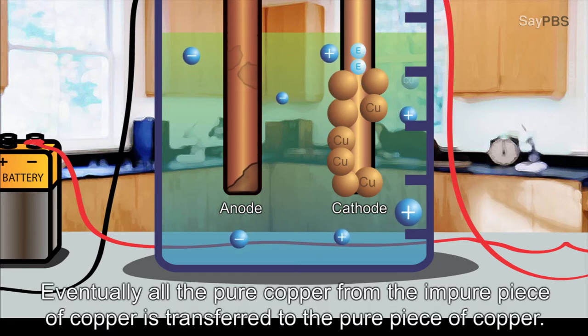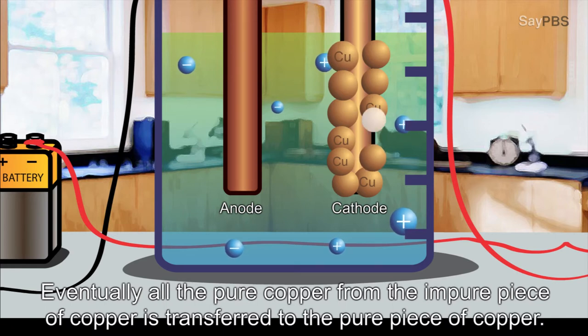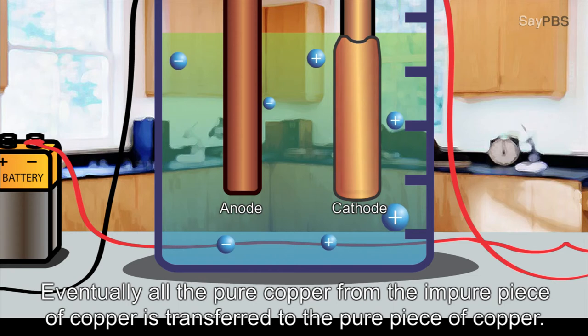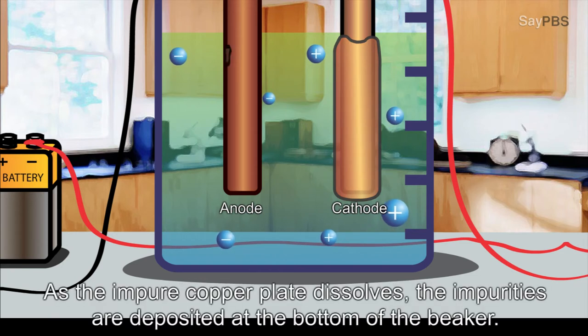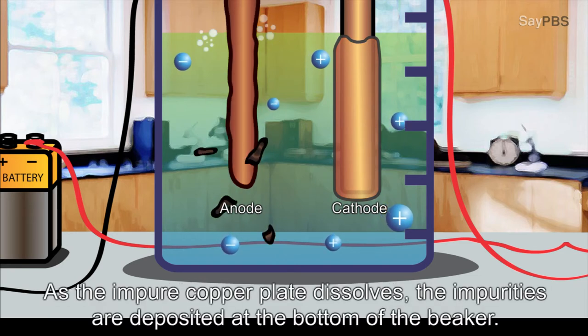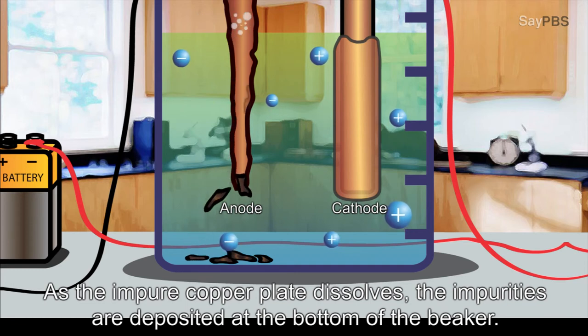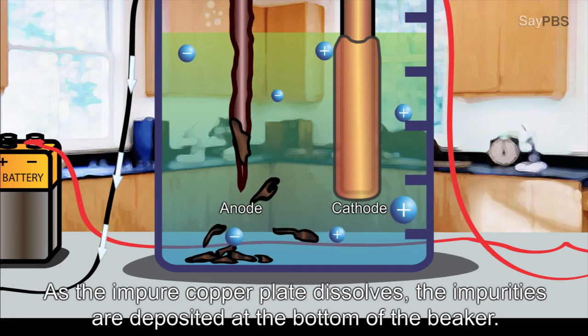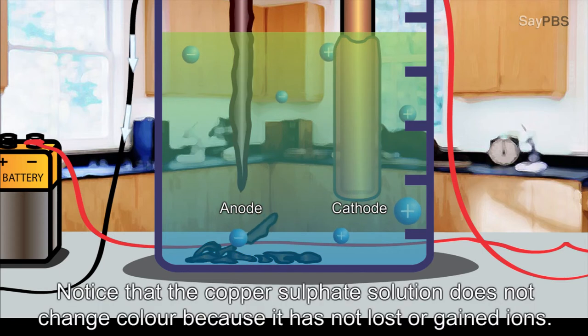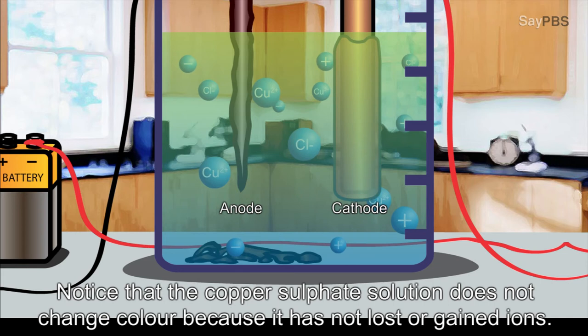Eventually, all the pure copper from the impure piece of copper is transferred to the pure piece of copper. As the impure copper plate dissolves, the impurities are deposited at the bottom of the beaker. Notice that the copper sulfate solution does not change color because it has not lost or gained ions.